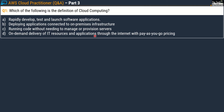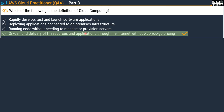Coming back to question one: which of the following is the definition of cloud computing? Option A: rapidly develop, test and launch software applications. Option B: deploying applications connected to an on-premises infrastructure. Option C: running code without needing to manage or provision servers. Option D: on-demand delivery of IT resources and applications through the internet with pay-as-you-go pricing. The correct answer as per AWS documentation is Option D.